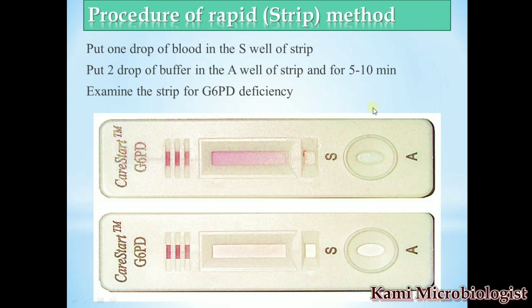Remember, when you find this type of result it means it is normal, or we can say it is a negative result. And if you find this type of result, it means there is G6PD deficiency.